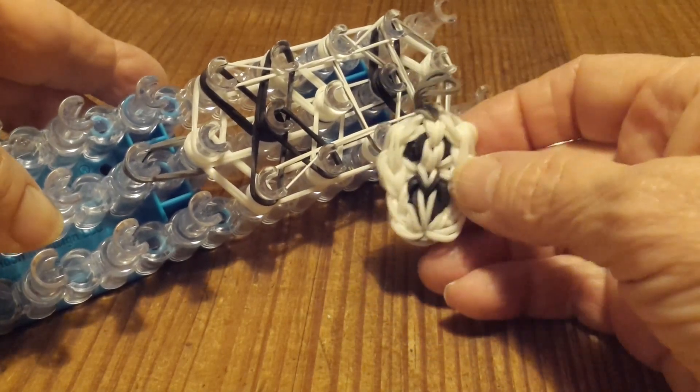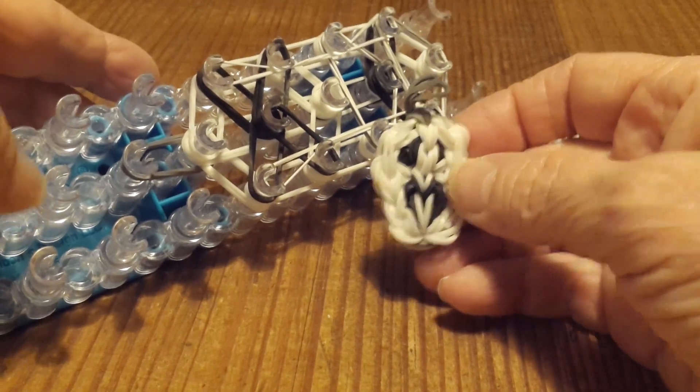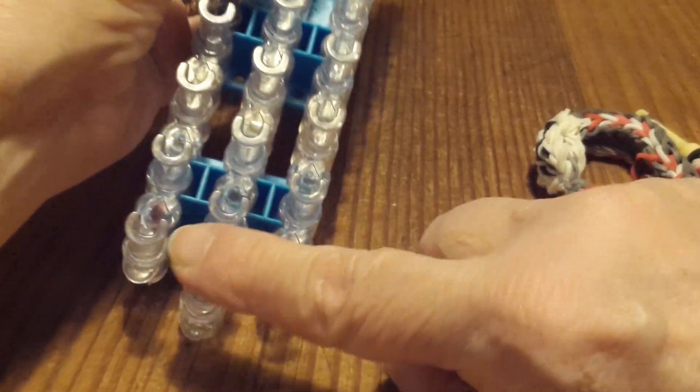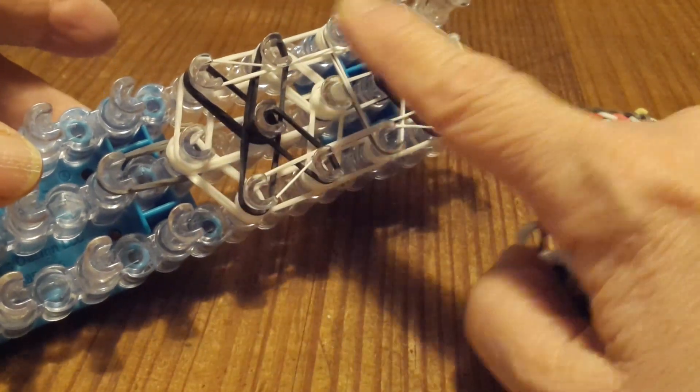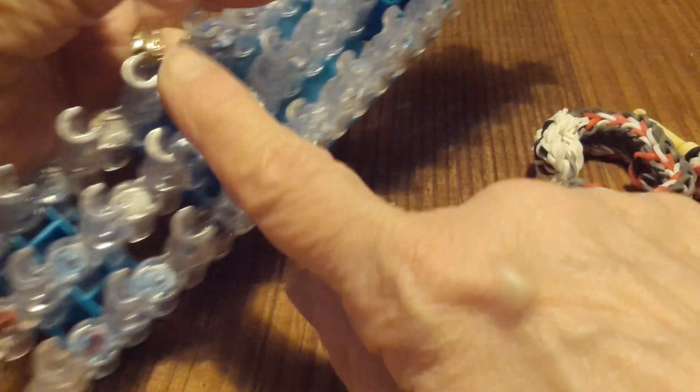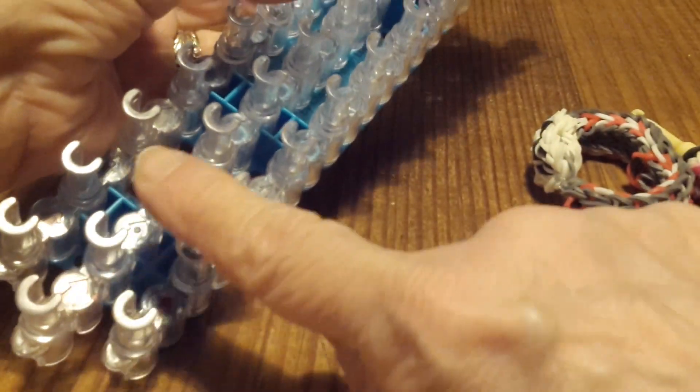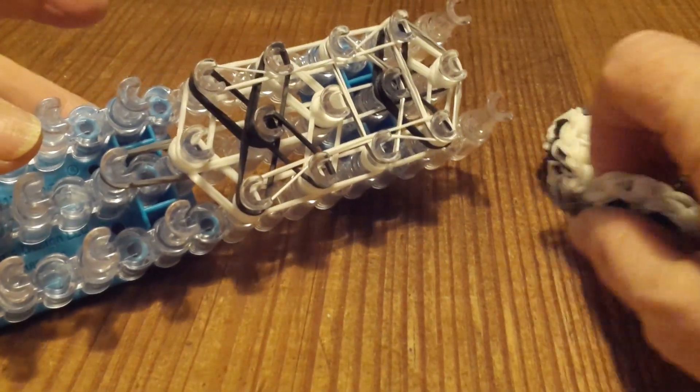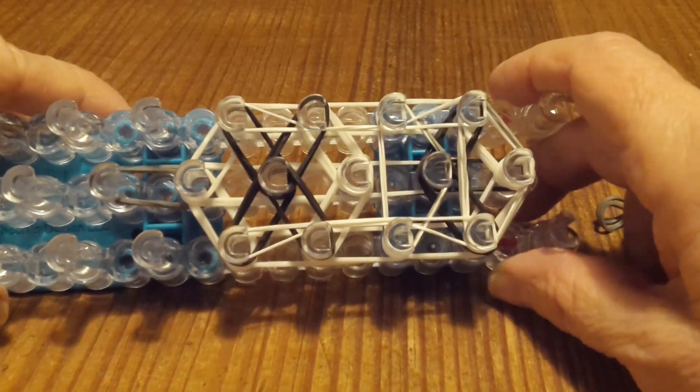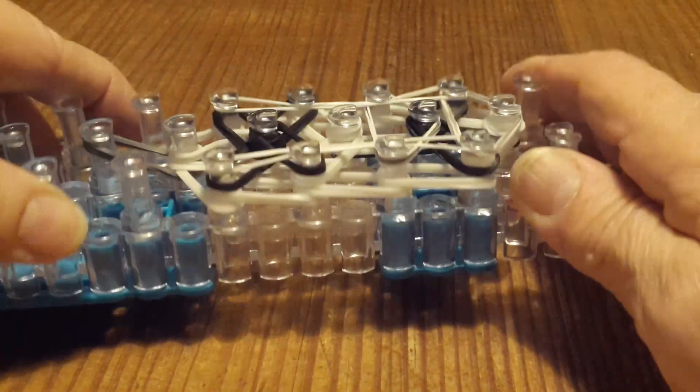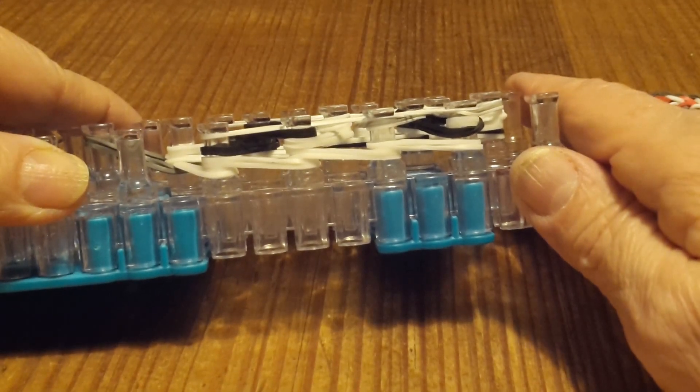Now, if you're only making a charm, you can start down here where it seems like the natural thing to do. But if you're going to make a bracelet, it has to be made up here on this end because the rest of the loom will be used to make the first part of our bracelet. So this is the layout of all the rubber bands that we did in part one.